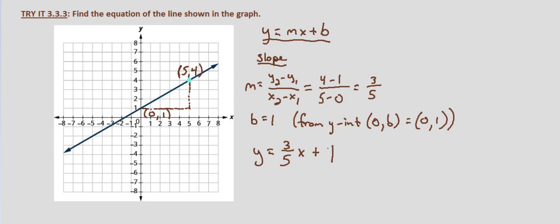So the equation of the line shown in the graph is y equals 3 fifths x plus 1. And we could check this by checking any other points that we could find by substituting in the points that we already had, our y-intercept,